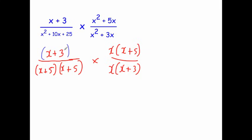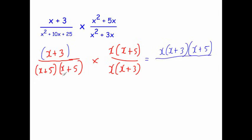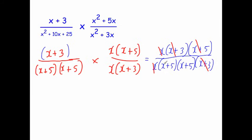Now we just cancel down. We've got an X and an X — they cancel. We've got (X + 3) and (X + 3) — they cancel. We've got (X + 5) and (X + 5) — they cancel. That leaves just 1 on the top and (X + 5) on the bottom. So the answer is 1 over (X + 5). These fractions looked quite complicated, but once we've cancelled it all down we get a nice simple answer.